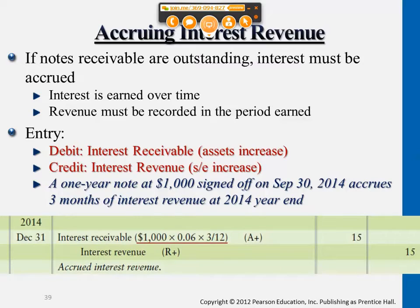Accrued means the accumulated interest entry. This is the interest we recognize as interest revenue in this accounting season because we signed the note this year — three months before year-end. So we only captured three months of interest here, not the whole thing.